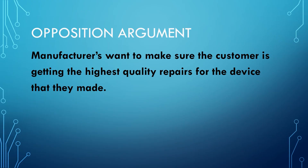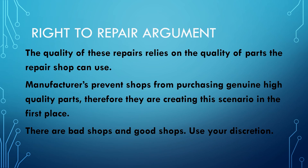The other opposition argument is that manufacturers want to make sure the customer is getting the highest quality repairs for the device they've made. This is understandable — I would personally want to know if a part inside my product was replaced with an aftermarket part or a genuine part. However, the quality of repairs relies on the quality of parts the repair shop can use. The manufacturer prevents shops from purchasing genuine high-quality parts, creating this scenario in the first place. Just like mechanics and contractors, there are good shops and bad shops, and customers have multiple tools to determine good from bad. Some of the worst repair attempts I've seen have come straight from Apple.